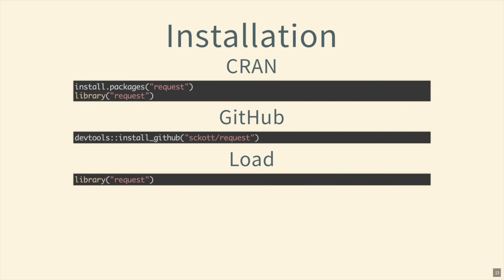For installation: the stable version is on CRAN — just do install.packages(). The GitHub development version can be installed with install_github(). Then load the package. Now I'm going to get rid of these slides and move to some live coding.